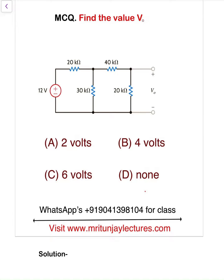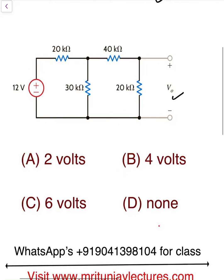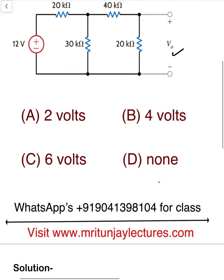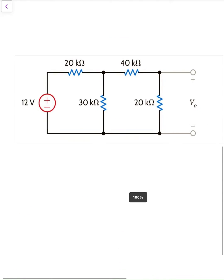Today I will focus on determining V0. You can use a lot of methods — current division rule, nodal analysis, KVL, KCL, mesh analysis — but today I will solve this question with the help of source transformation.